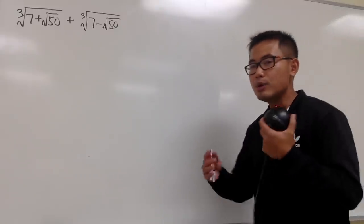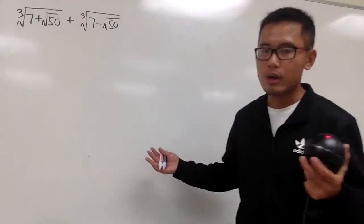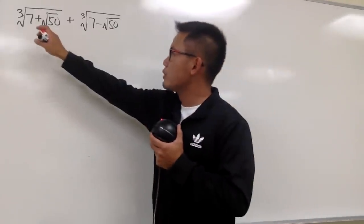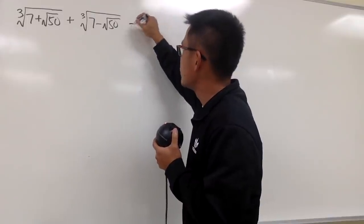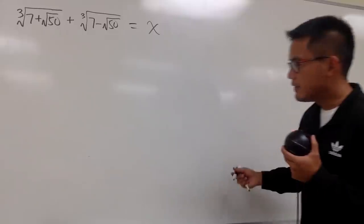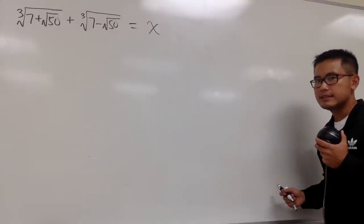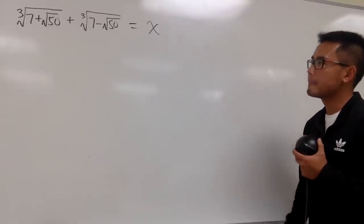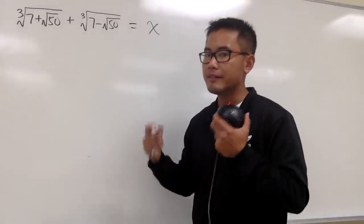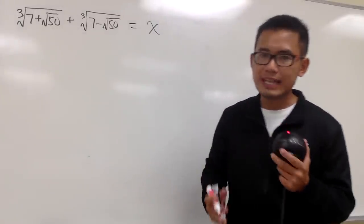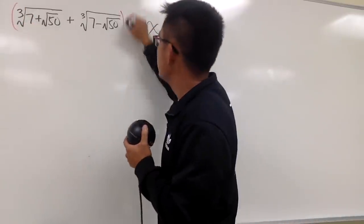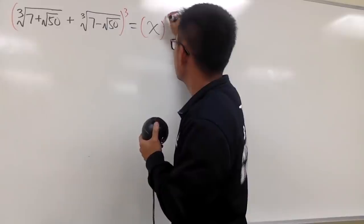This is how I'm going to approach it. I want to raise to the third power, but I have to do it carefully and correctly. I'm going to call this expression x — I don't know what it is yet. At the end, if I can get the value of x, then I'll be done. From here, I will have the equation. I can raise both sides to the third power.